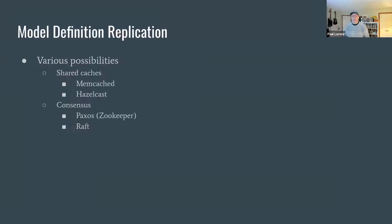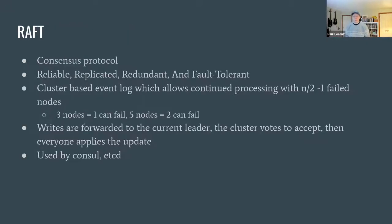We have some different ways we could replicate our data. There are things like shared caches — Memcached or Hazelcast — and there are various consensus algorithms with different implementations like Paxos, which is used by ZooKeeper, or Raft, which is used by Consul and etcd. Let's take a look at Raft specifically to see what kind of guarantees it can give us.